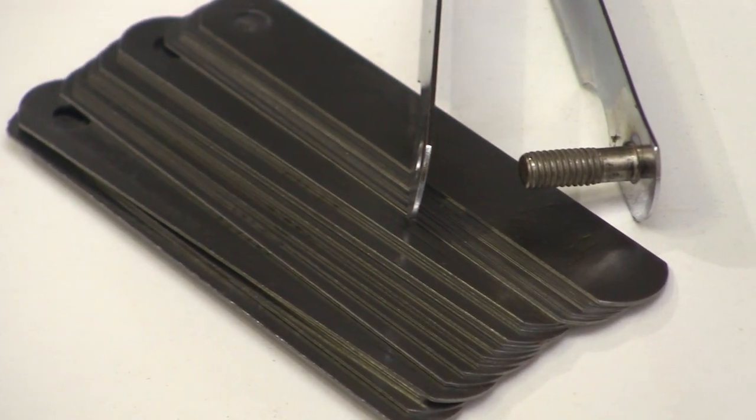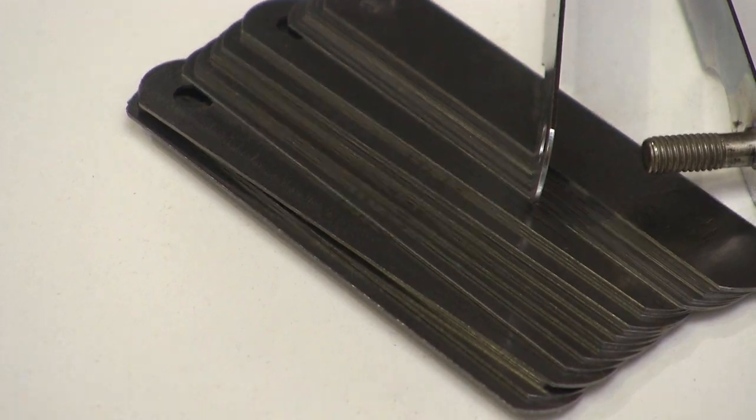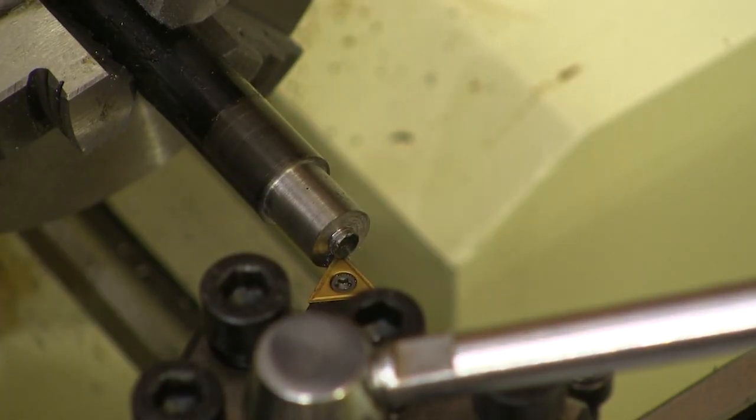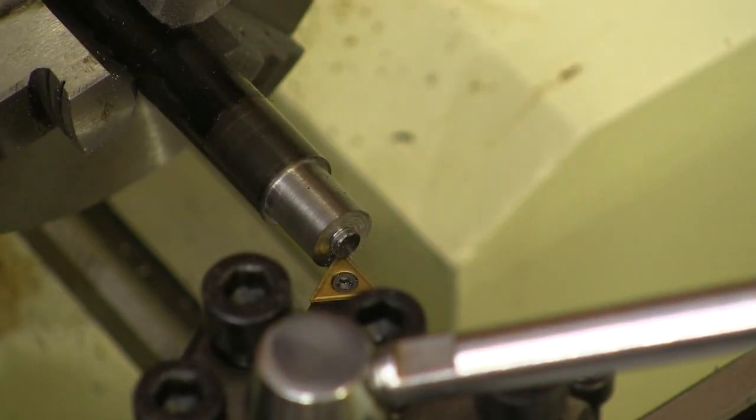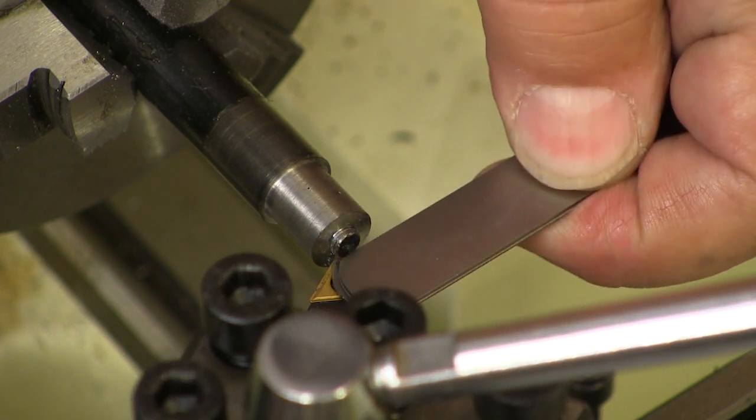The toughest part of using these turned out to be wiping the oil off them that they come covered in. I left the cutter underneath the nub and made up a stack of shims that got me to the center of the nub.